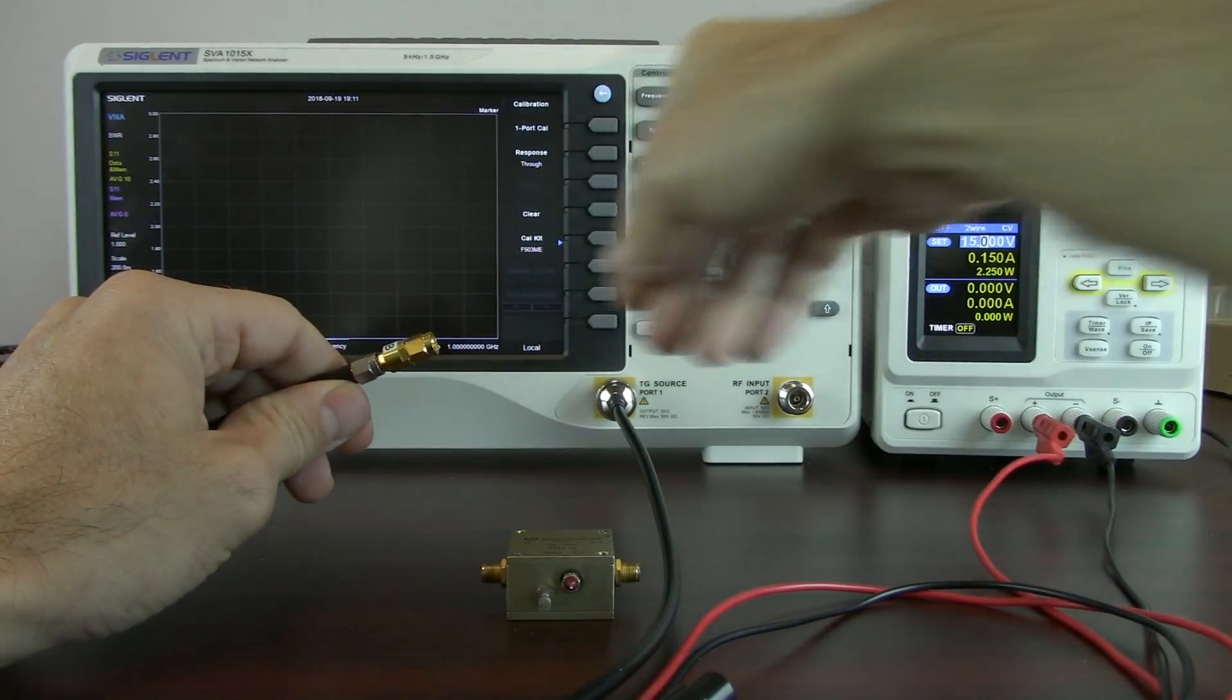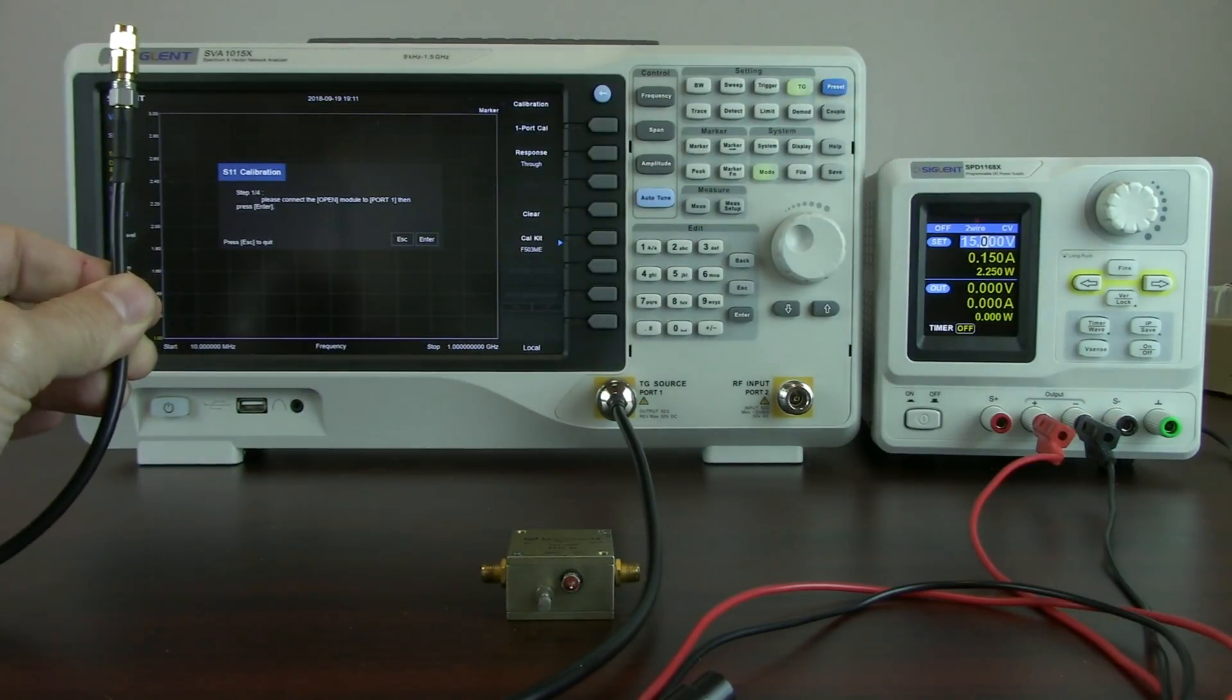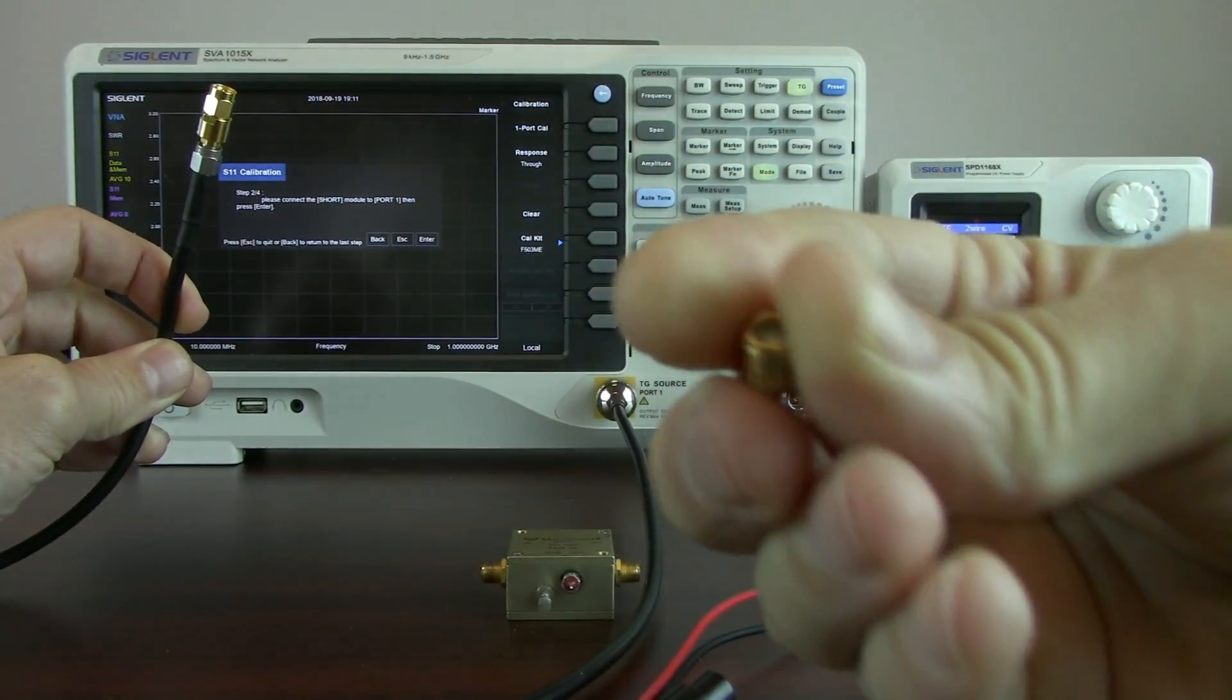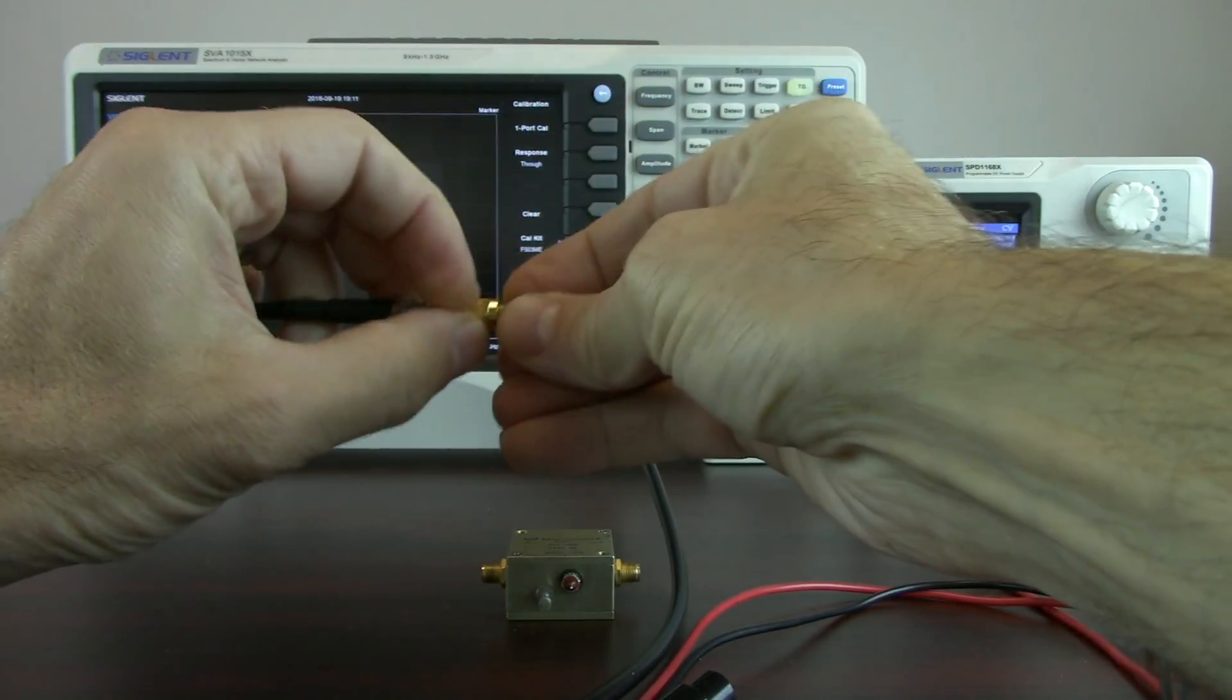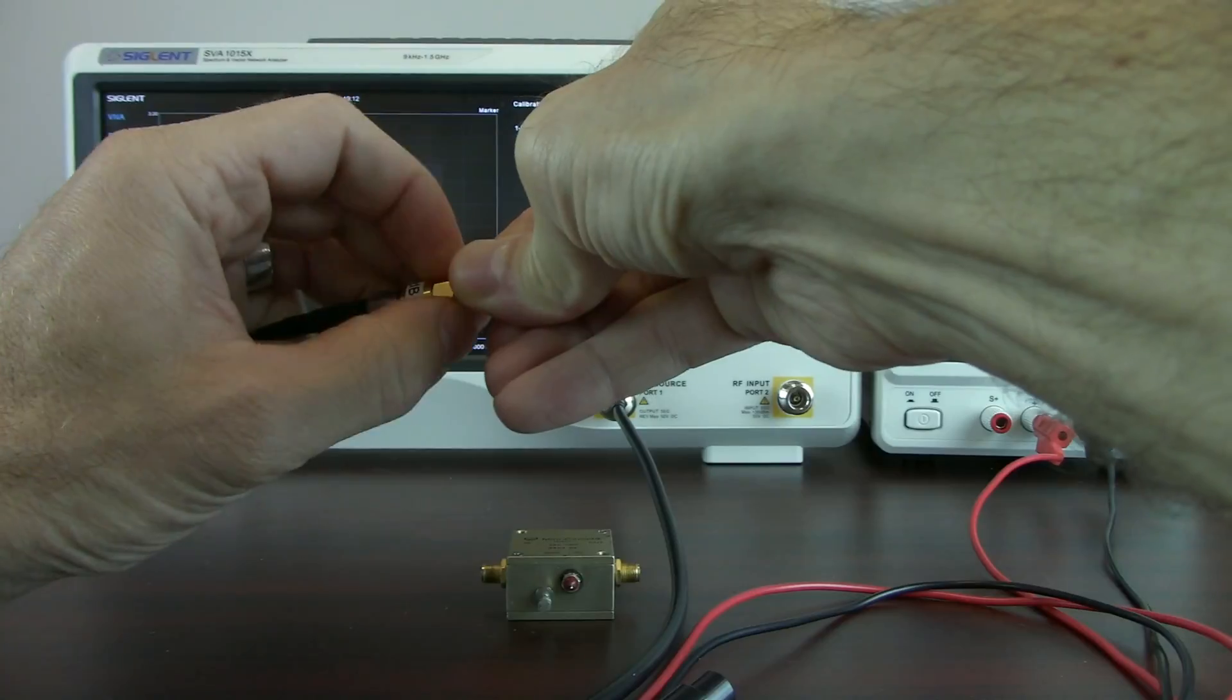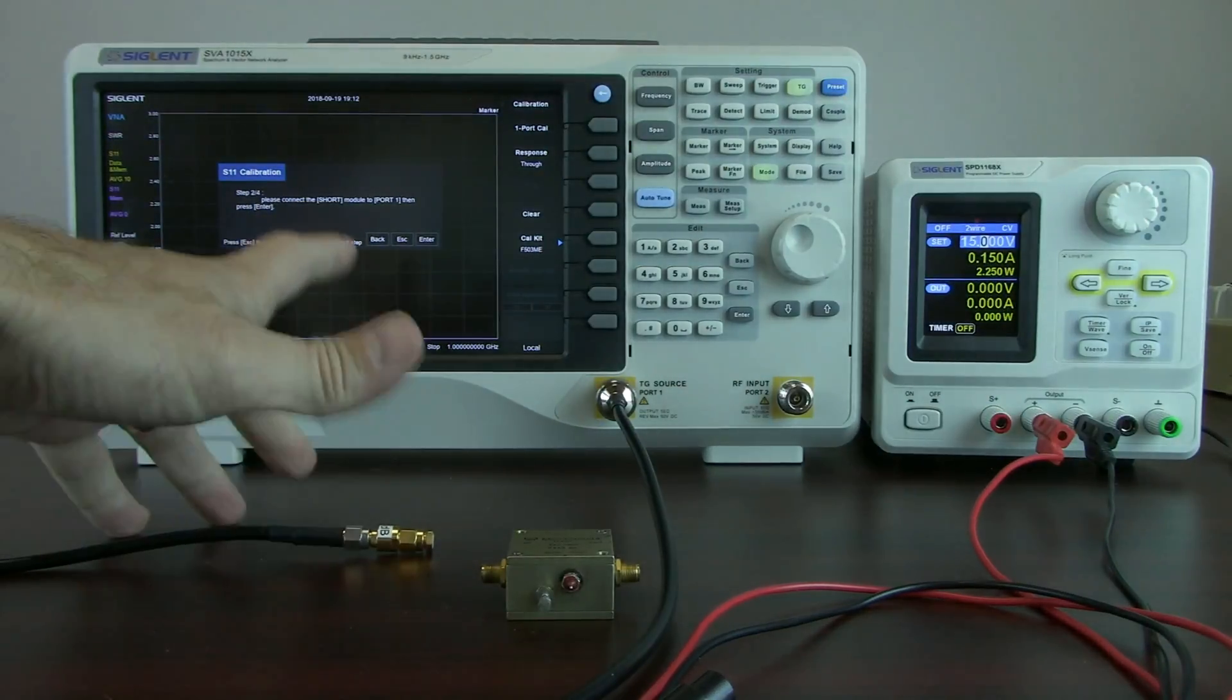Now I'm going to go to calibration and I'm going to perform one port cal. Now it's going to ask me please connect the open module. We're just going to leave it open and hit enter. Now it says to short. So I've purchased and already characterized this SMA short. I'm holding the short and I'm rotating the hex connection here for the adapter. This calibration process is going to remove the effects of the attenuator and the cabling or at least minimize them.